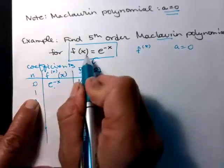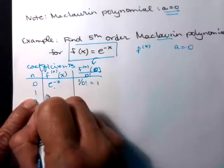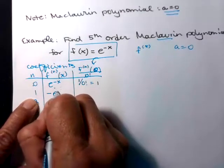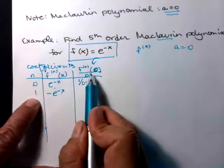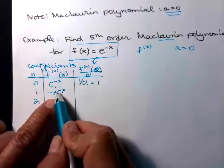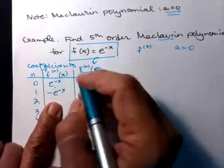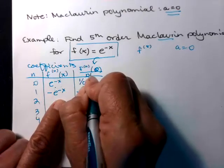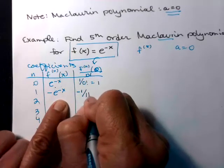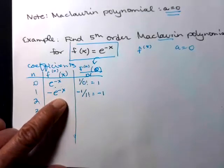Let's do the next one. So if n is one, that's the first derivative. So the first derivative of e to the negative x is negative e to the negative x. Now we'll evaluate that at zero. e to the negative zero is one, but then I have that minus sign out front. So that's going to be negative one over n factorial. So one factorial, also one. So negative one over one is negative one.